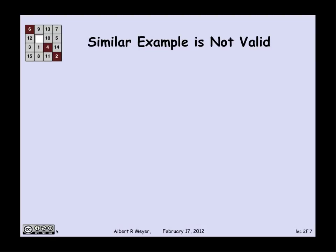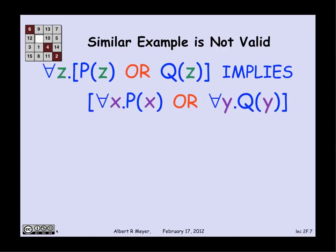So let's look at a similar example where it is possible to prove something. Namely, I can prove that something's not valid. So here's a similar looking formula. So this one says that for every z, if P of z holds or Q of z holds, then for every x, P of x holds or for every y, Q of y holds.